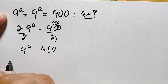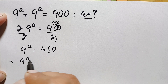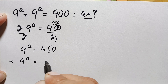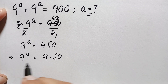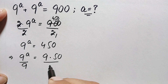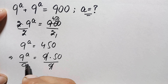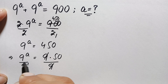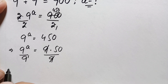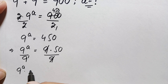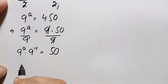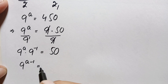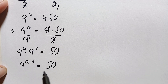Using the second method, we write 9^a = 9 times 50, which is 450. Dividing both sides by 9, on the left hand side the power of 9 is 1, so we bring it to the numerator. This gives us 9^a times 9^(−1) = 50. Since the bases are the same, we add the powers: 9^(a−1) = 50.